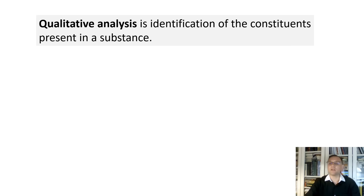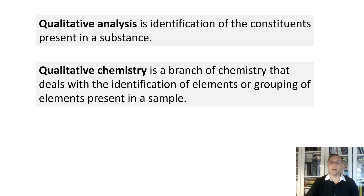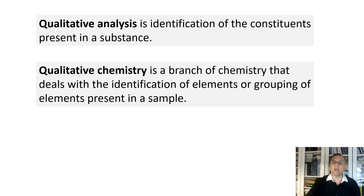In our next videos, I will show you how to identify simple sugars and proteins in different foods. This type of analysis comes from qualitative chemistry, a branch of chemistry that deals with the identification of elements or groups of elements present in a sample. The techniques employed by qualitative analysis vary in complexity depending on the nature of the sample.